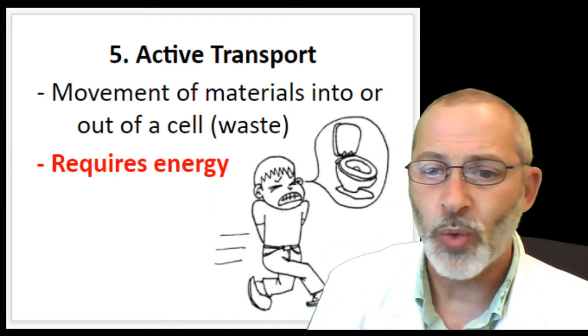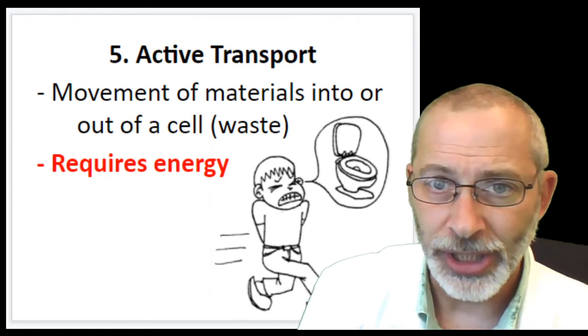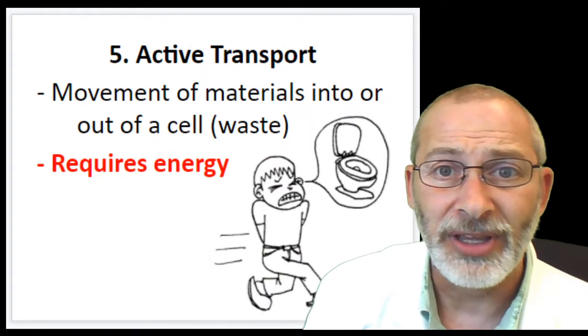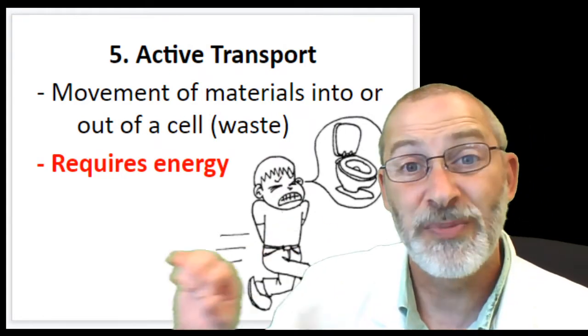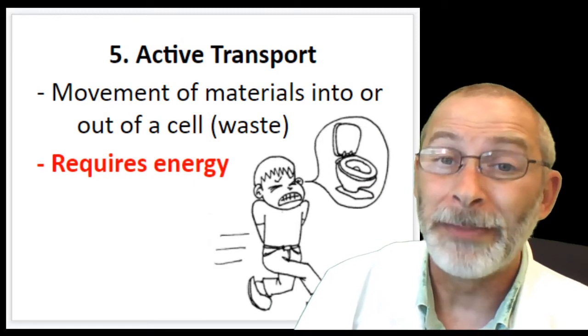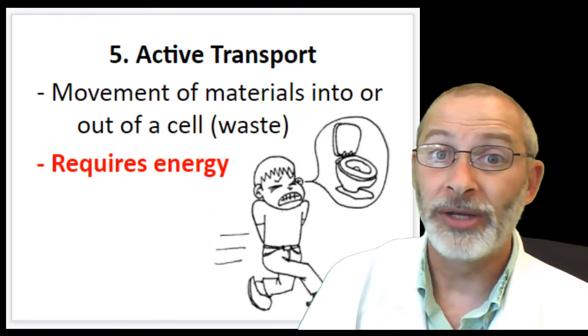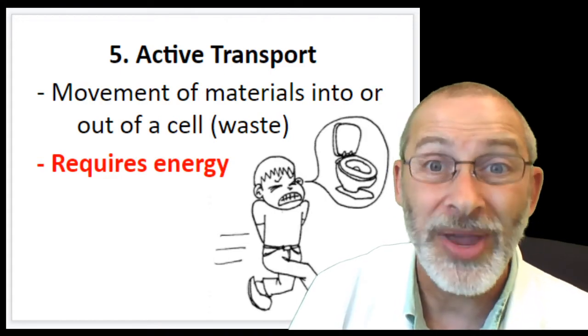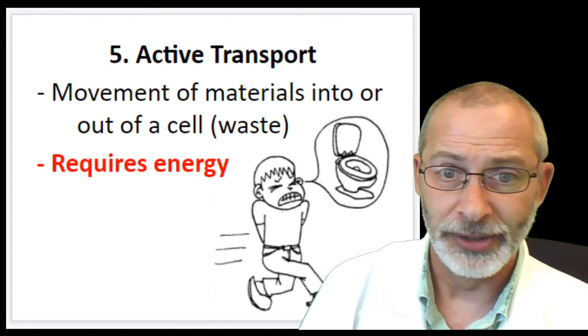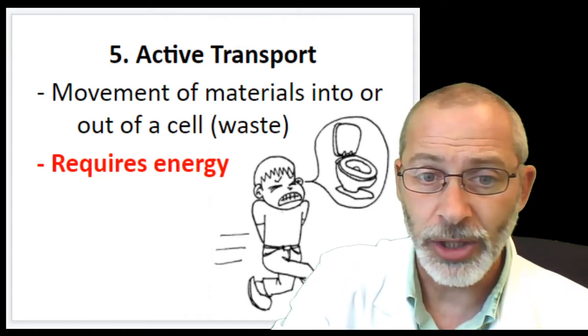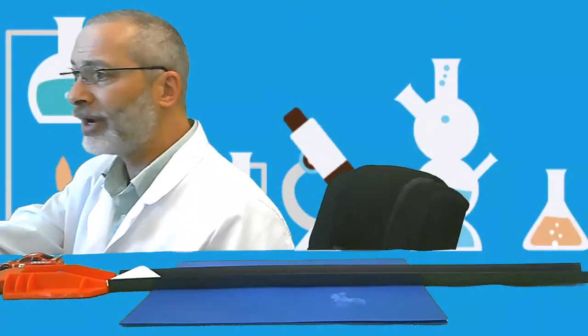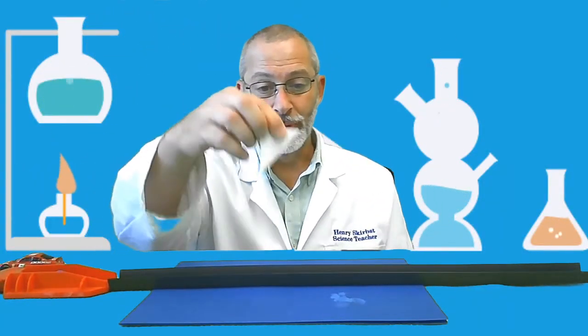Active transport requires energy. And think about it, it's in the context of waste material. If a cell did not expel its wastes from its structure, the wastes would build up to a point where the cell would explode with waste material. So a cell has got to get rid of that waste material. Let's go up to a close-up view here of an example I like to use for active transport. Two examples here real quick.